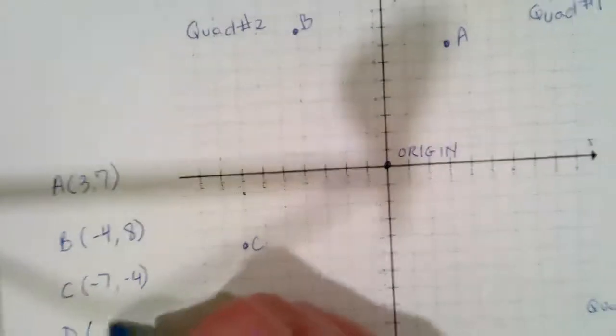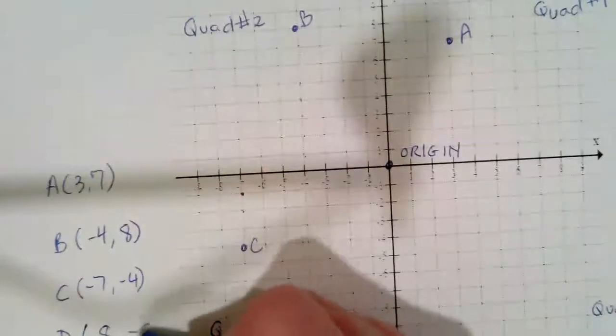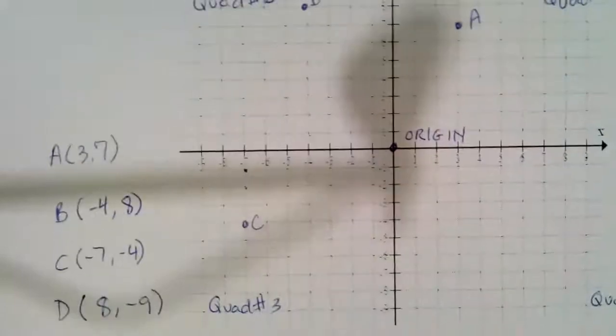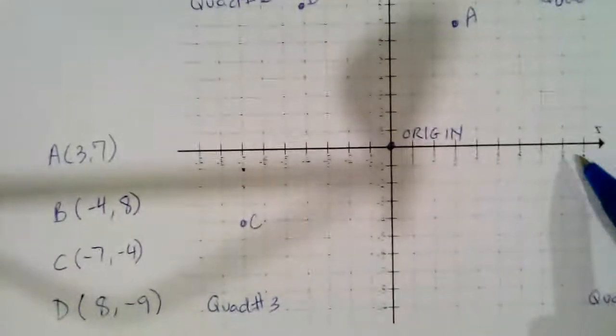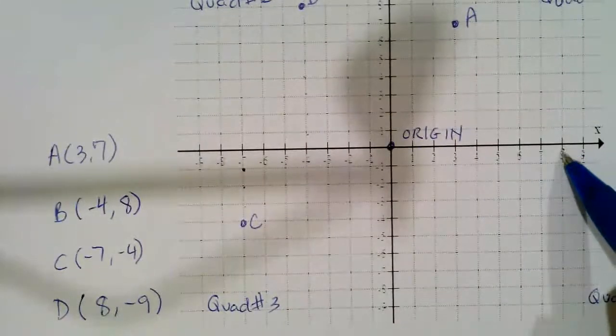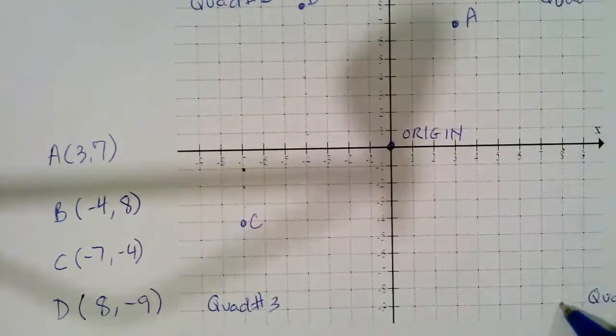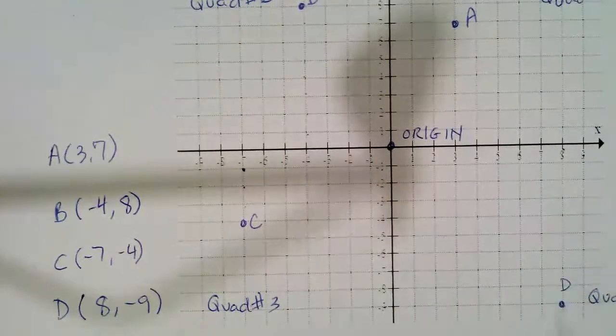And D, we're going to do the coordinates (8, -9). And so we're going to go over to positive 8, and we're going to go down nine squares. And that is point D.